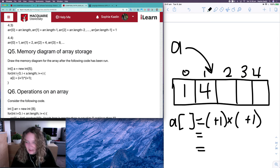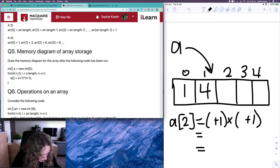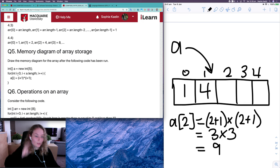Our next index is two. So we've got array at index two is equal to two plus one times two plus one, three times three, which is nine. So we can start to see our pattern here. What it's doing is it's taking our index, adding one to it and squaring it.